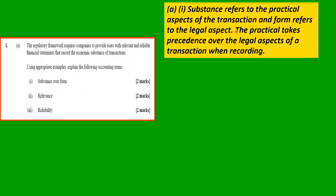Substance refers to the practical aspects of the transaction and form refers to the legal aspect. The practical takes precedence over the legal aspect of the transaction when recorded.